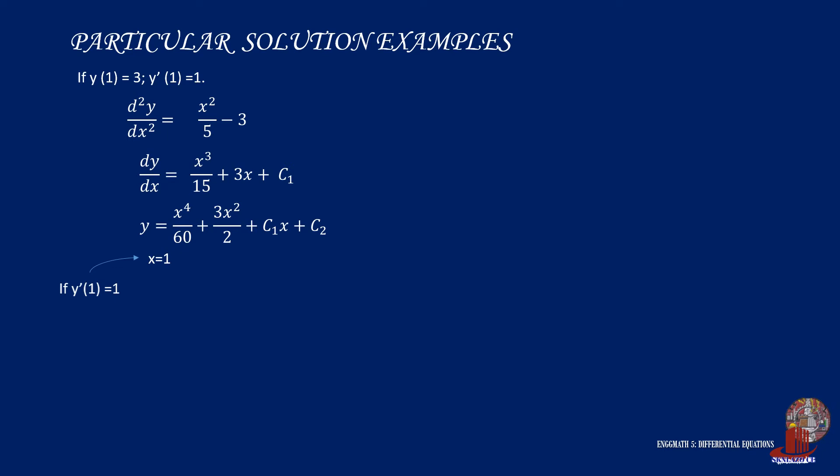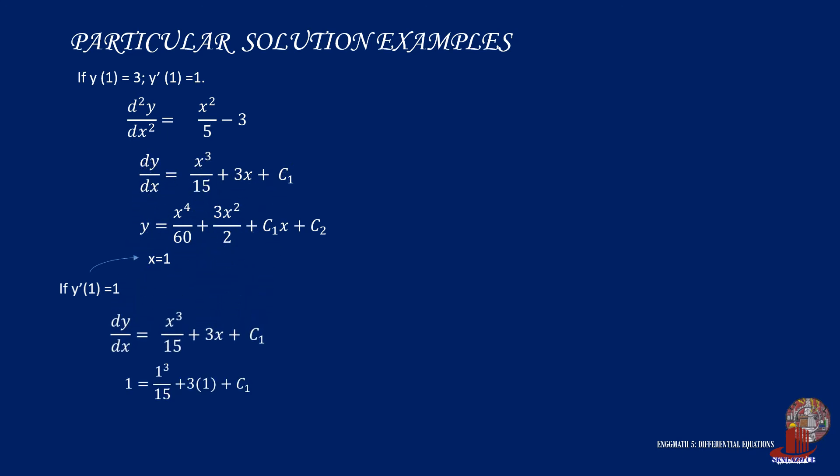To find c1, we use the condition that y prime equals 1 when x equals 1. Plugging these values into the first derivative function gives: 1 equals 1 cubed over 15 plus 3 times 1 plus c1. By simplifying, we get c1 equals negative 31 over 15.